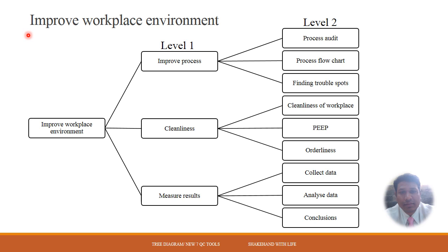This is Improve Workplace Environment. The Quality Improvement Objective is Workplace Environment. On this first box, I need to write the Quality Improvement Objective which is Improve Workplace Environment. After brainstorming, the team, the three options come out here at Level 1.